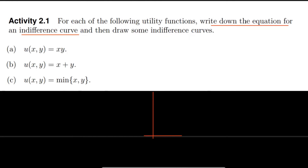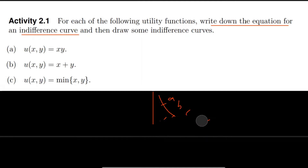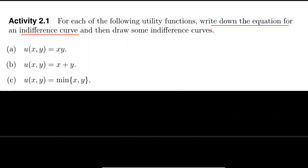An indifference curve looks like a rectangular hyperbola and is always convex to the origin. It shows a constant or equal level of satisfaction. For example, if an IC shows 100 units of satisfaction, then each combination along that curve — combination A, B, or C — will give equal satisfaction of 100 units. Keep this basic important concept in mind.